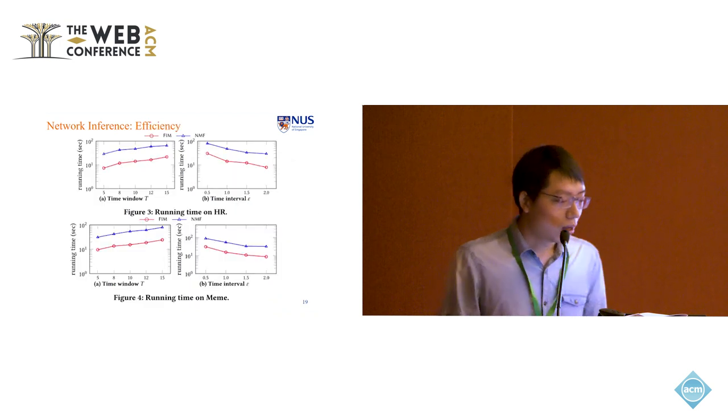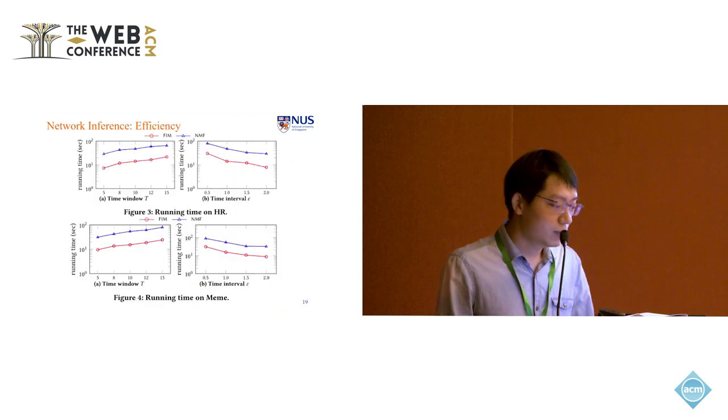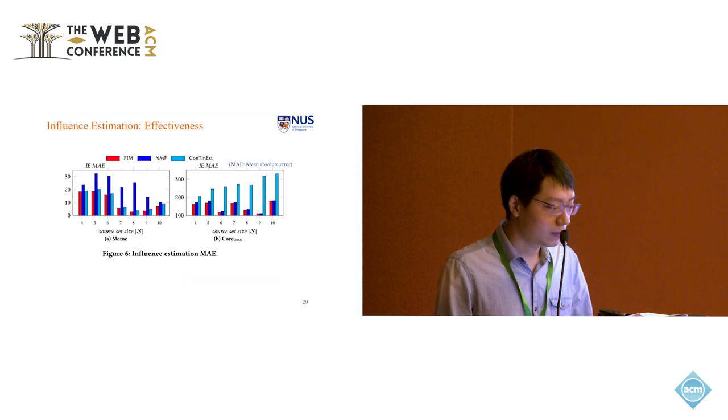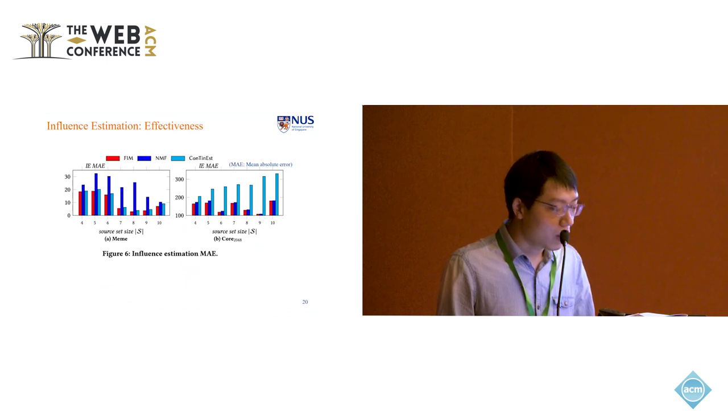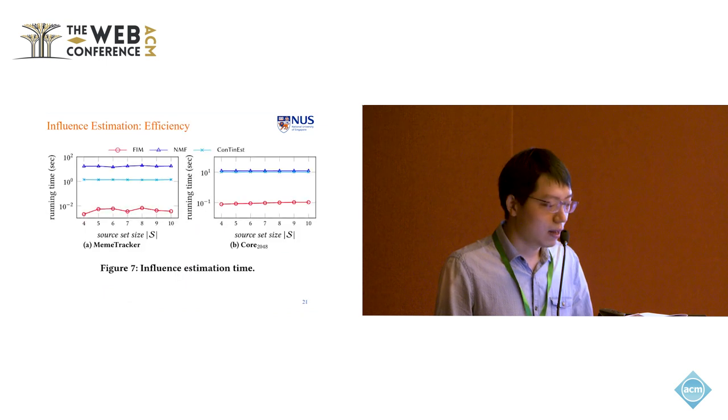For network inference efficiency, we can note that our method is almost four to one magnitude faster than the baseline. And for influence estimation, we compare our method with two baselines in terms of the mean absolute error. It shows that our method achieves consistently smaller MAE error than the baseline. And also it runs on nearly one magnitude faster than the baseline.